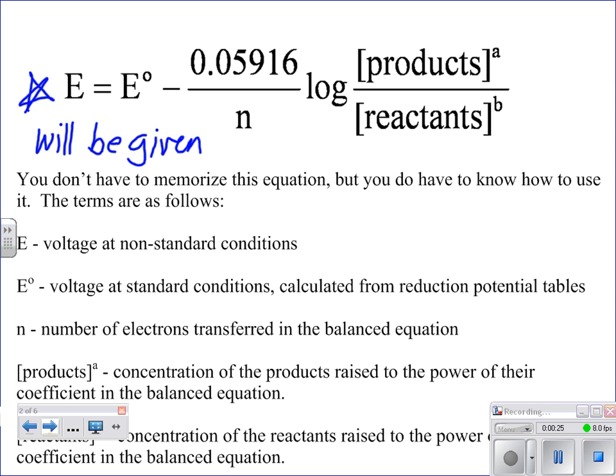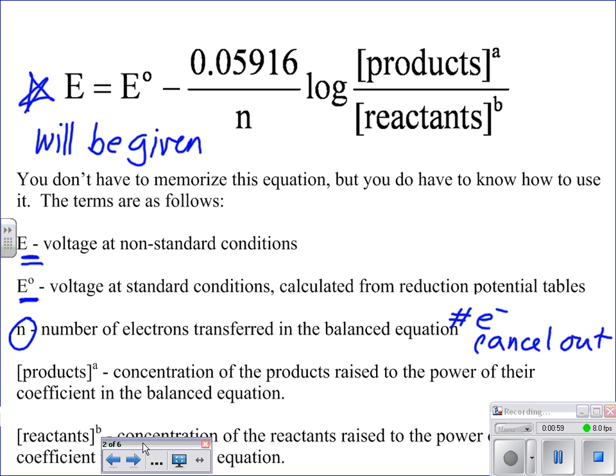We still will have to calculate our voltage at standard conditions, and then we will come back and calculate our voltage at the non-standard conditions. Some other variables that we need to know are the number of electrons that are transferred in your balanced equation. So in other words, this is the number of electrons that cancel out when we go through that balancing process. And then we have our concentration of our products and our concentration of our reactants, and we are going to raise that to the power of the coefficient in the balanced equation. So again, there's another reason why it's so important for us to be able to balance those equations.